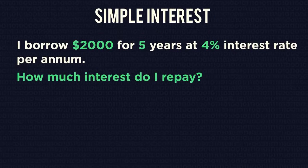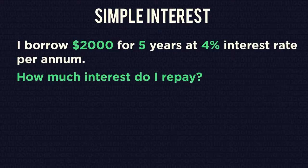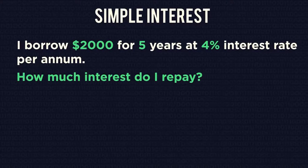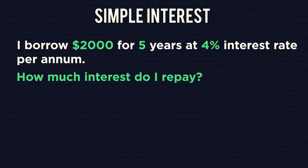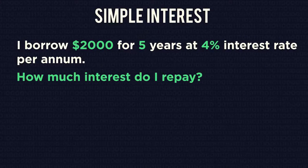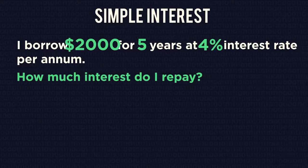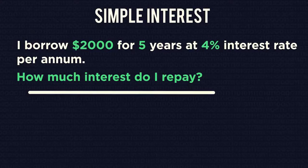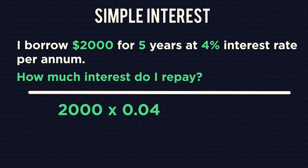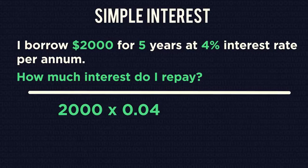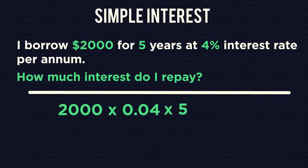For simple interest, you just pay or receive the exact same amount of interest every year. Simply multiply the numbers together. The interest I have to pay is 4% of £2,000, paid five times.